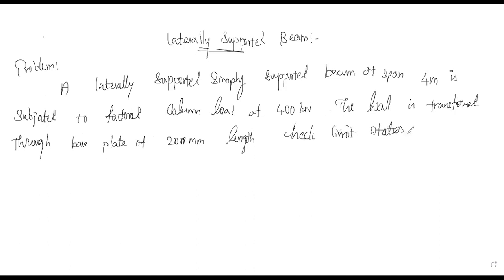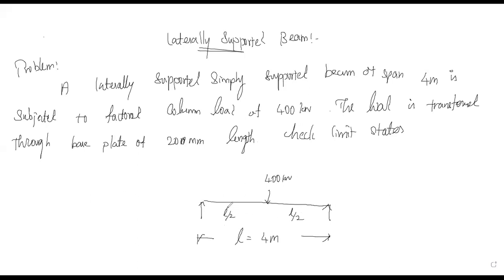The beam is simply supported and the span L is equal to 4 metres. The 400 kilonewton load is acting as a point load. Since nothing else is mentioned, we take it at L/2, so 2 metres each side. We label support B and the load point C. We need to calculate reactions Ra and Rb, and the maximum bending moment at C.